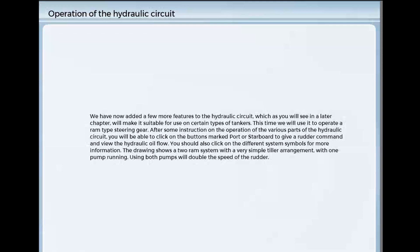You should also click on the different system symbols for more information. The drawing shows a two-ram system with a very simple tiller arrangement with one pump running. Using both pumps will double the speed of the rudder. Mouse over the different components to get an explanation of each.